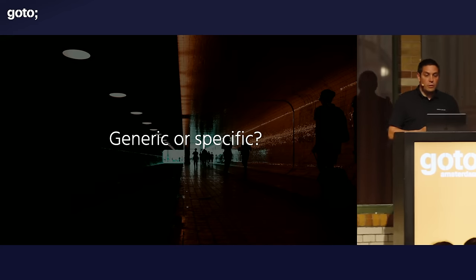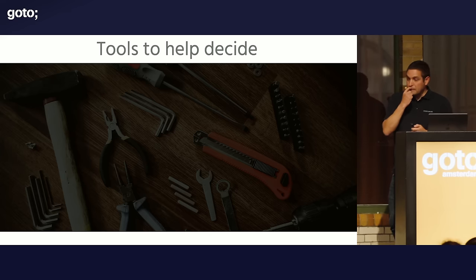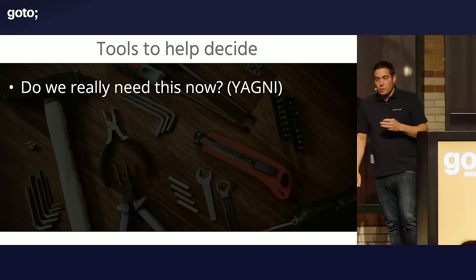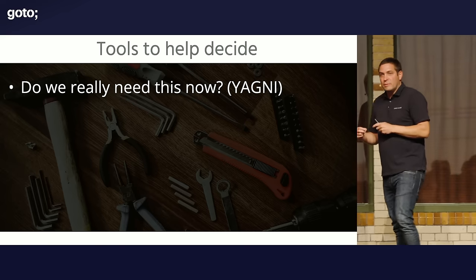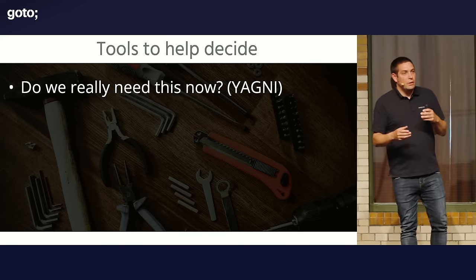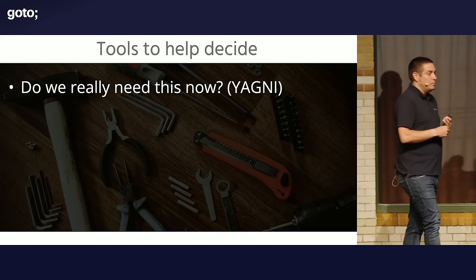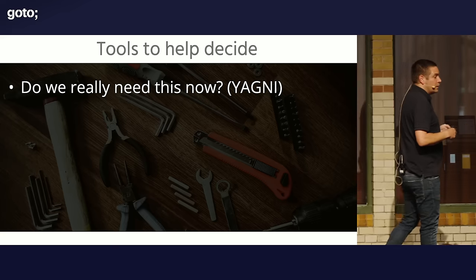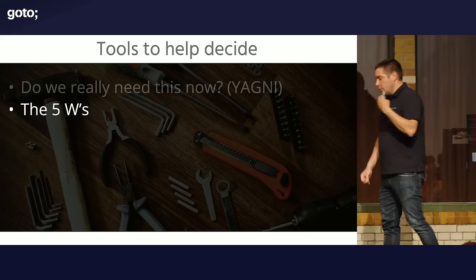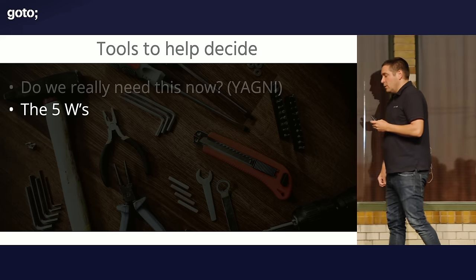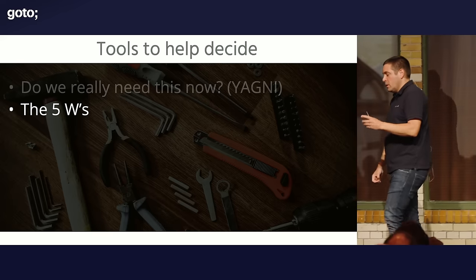How do you decide whether to go generic or specific? A couple of tools to help. The first is asking yourself: do we really need this now? You can also see it as YAGNI — You Ain't Gonna Need It. Do we really need to make this generic now? Do we see multiple use cases? Probably not. My favorite tool is the Five Whys — if somebody wants to do something and you want to figure out what and why, you keep asking 'why' until either they get stuck, or you have an answer you can live with.